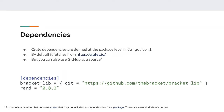Dependencies are defined at the package level in cargo.toml — you don't generally declare dependencies at a crate level, though you can. The default repository for crates you can depend on is crates.io, but you can also use GitHub as a source.